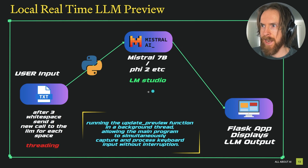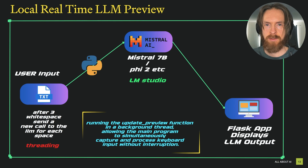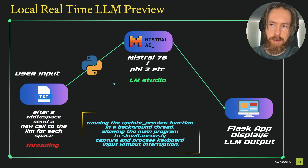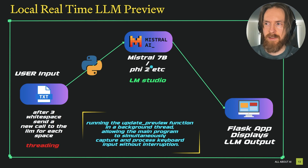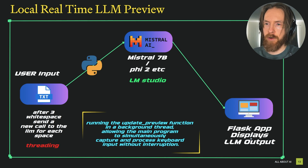So let me explain how this works. Basically we have a Python program. We use threading, and when the user does an input we capture this with the keyboard library. After three whitespace presses — basically spacebar pushes — we make a new call to the LLM. So for each time we press space, we send a new call to the local Mistral 7B running on LM Studio, and this displays the output from the local model.